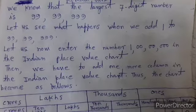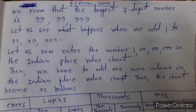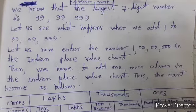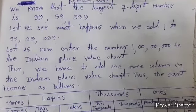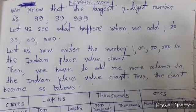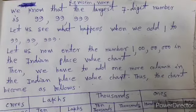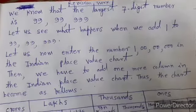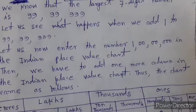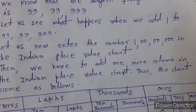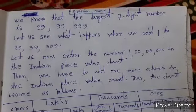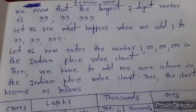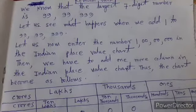We know that the largest 7-digit number is 99,99,999. Let us see what happens when we add 1 to 99,99,999. Let us now enter the number 1 crore in the Indian place value chart. Then we have to add one more column in the Indian place value chart.